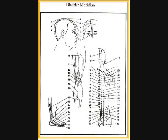Urinary Bladder channel indications only, points 36 through 67. UB36: pain in the lower back and gluteal region, constipation, muscular atrophy, pain and numbness and motor impairment of the lower extremities. UB37: pain in the lower back and thigh, muscular atrophy, pain and numbness and motor impairment of the lower extremities, hemiplegia.